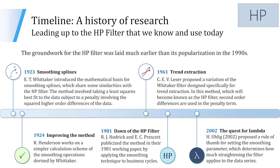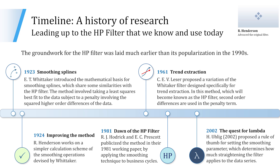Let's look at a timeline of the history of research into the HP filter. The groundwork was laid much earlier than its popularization in the 1990s. In fact, in 1923, Whitaker introduced the mathematical basis for smoothing splines, which share some similarities with the HP filter. The method involved taking a least squares best fit to the data, subject to a penalty involving the squared higher order differences of the data. Just a year later, Henderson worked on a simpler calculation scheme of the smoothing operations devised by Whitaker.